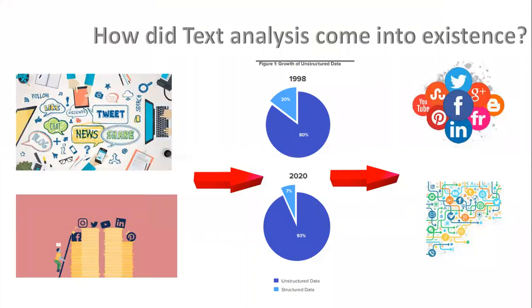How did text analysis come into existence? With the rise of big data, the traditional strategy of analyzing text manually in order to understand the themes and patterns in our data has become slow and inefficient. It would be impossible to manually analyze each record and still keep up with analysis demands.